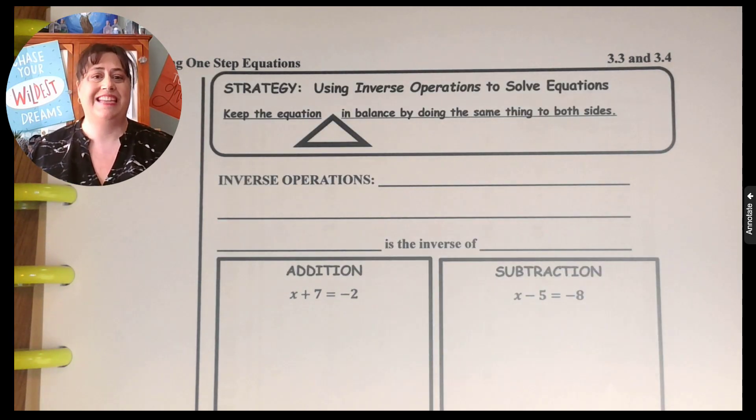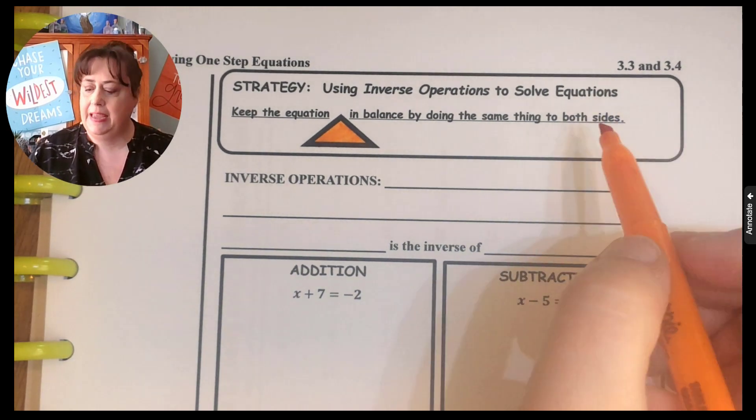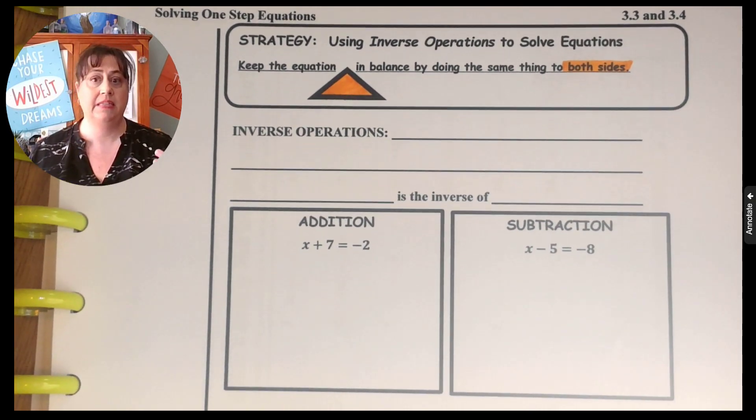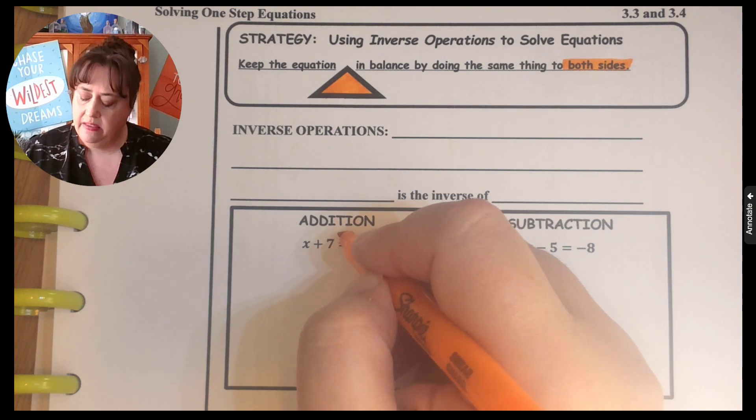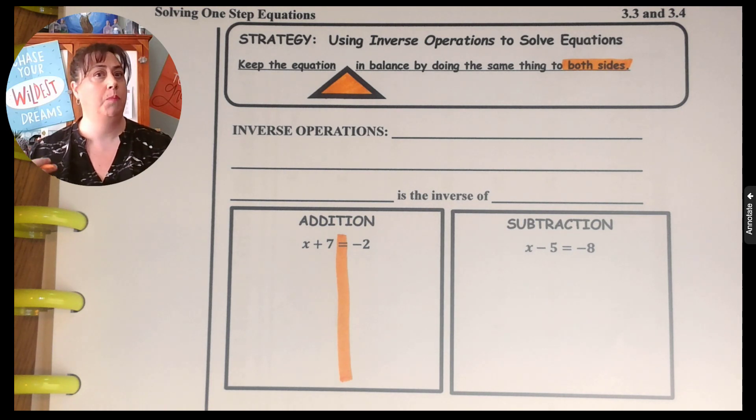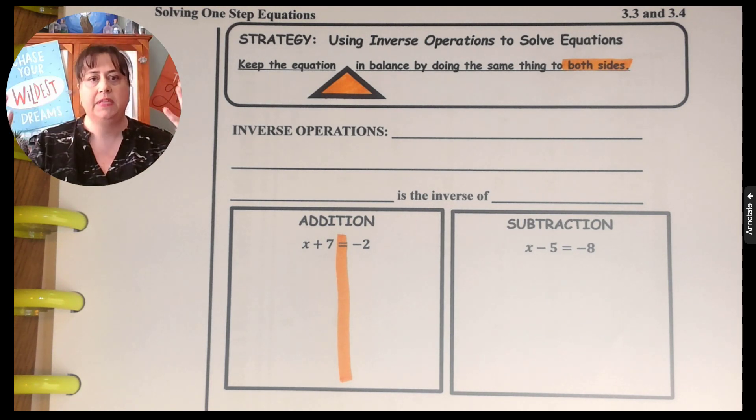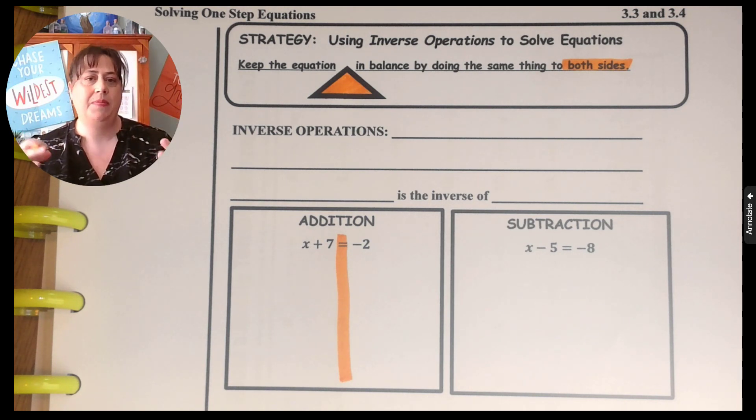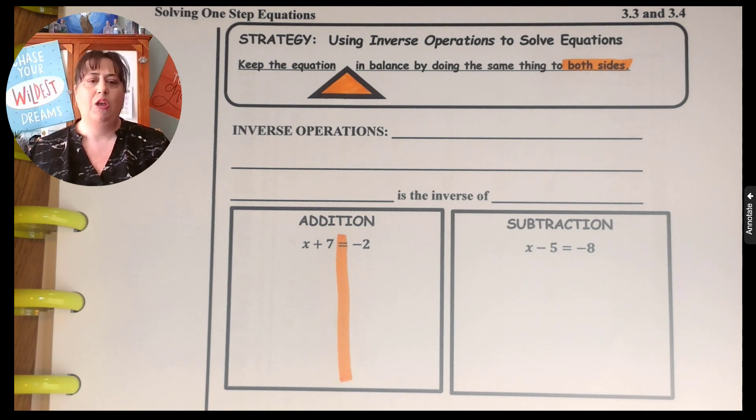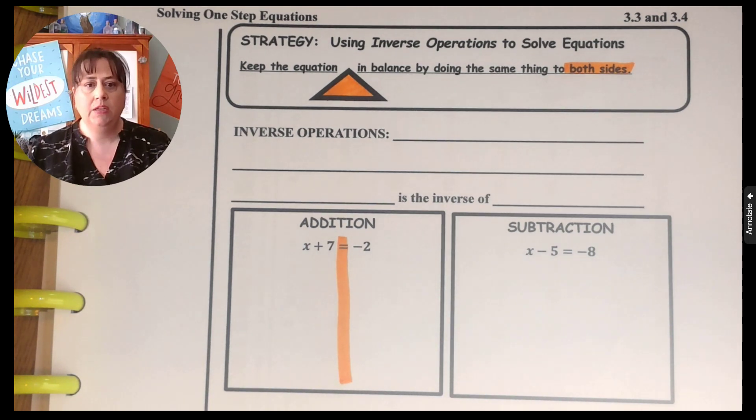So today we're primarily going to focus on this idea of keeping equations balanced and using inverse operations. That is our strategy. We're going to keep things balanced by doing the same thing to both sides. And to help us remember this idea of doing the same thing to both sides, we are going to use this strategy that I call putting in the road, because we know that when we cross a road we look both ways. And so this idea helps us with looking both ways and doing the same thing to both sides. It also helps with organization because then our work stays nice and neat and going straight down.